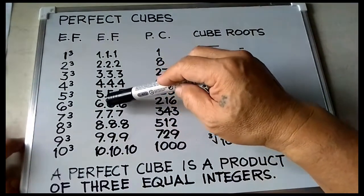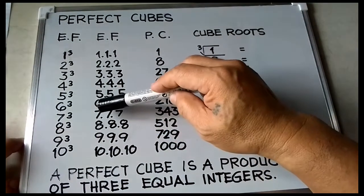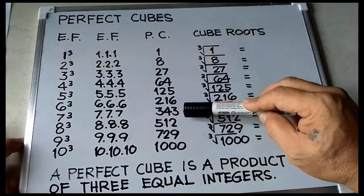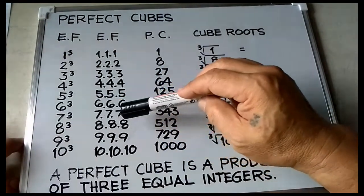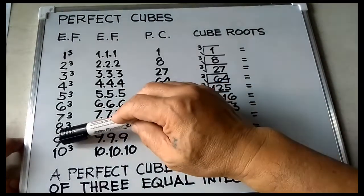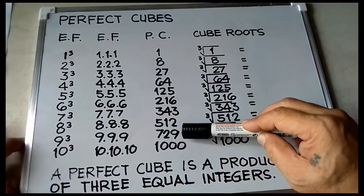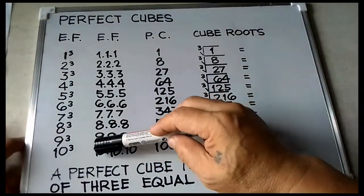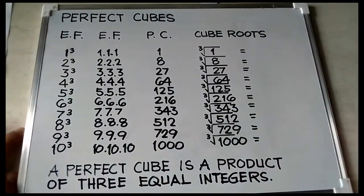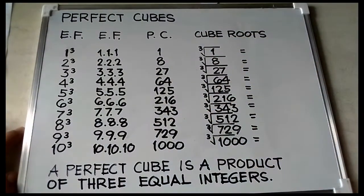5 cubed is equal to 5 times 5 times 5, is equal to 125. 6 cubed is equal to 6 times 6 times 6, is equal to 216. 7 cubed is equal to 7 times 7 times 7, is equal to 343. 8 cubed is equal to 8 times 8 times 8, is equal to 512. 9 cubed is equal to 9 times 9 times 9, is equal to 729. 10 cubed is equal to 10 times 10 times 10, is equal to 1000. All of these are perfect cubes — I gave 10 examples.